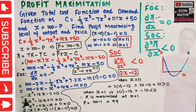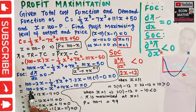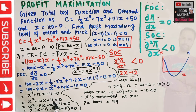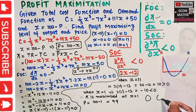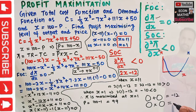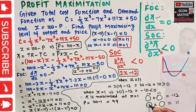Multiplying both sides by -1, we get: X² - 12X + 11 = 0. This is a quadratic equation. We split the middle term by finding two numbers whose sum equals -12 and whose product equals 11. Those numbers are -11 and -1, since (-11) + (-1) = -12 and (-11)×(-1) = 11.